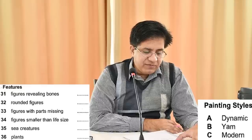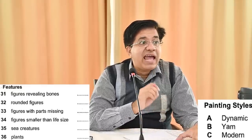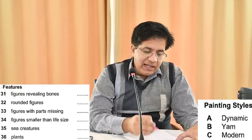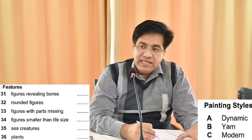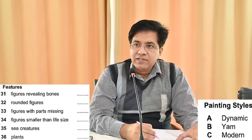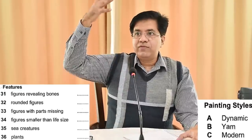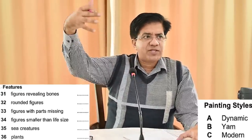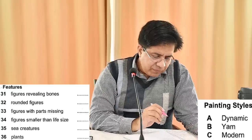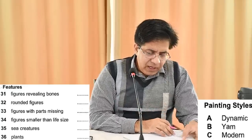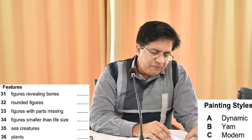Figures revealing bones — they use the word 'X-ray', and that refers to the Modern style. So C is the correct answer for Question 31. X-ray reveals bones, which maps to the Modern style. Now let's go on to Question 32: rounded figures.